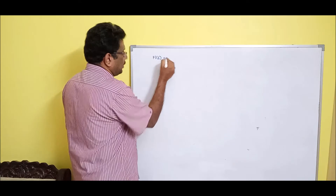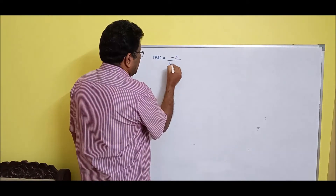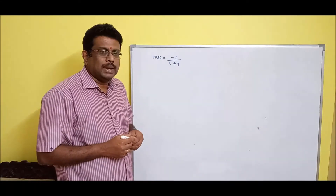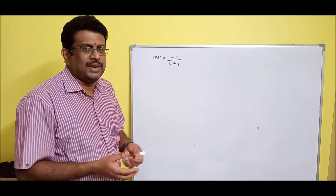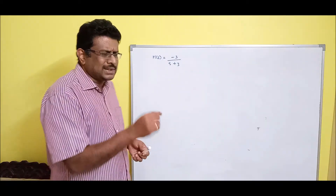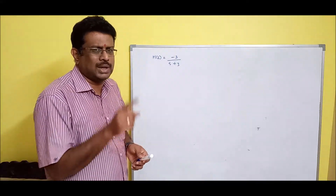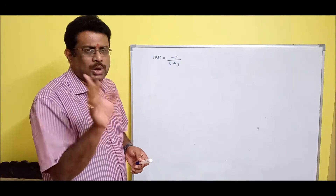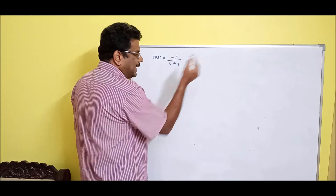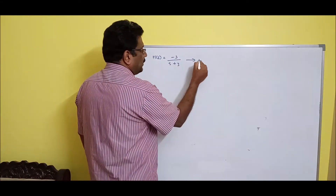H(s) is equal to -3 divided by (s + 3). Assume you have this simple problem: convert to a digital filter using the bilinear transform. Usually the sampling time period T — 99% of the time they won't mention it, but if they do, take that value. So we need to convert H(s) to H(z).